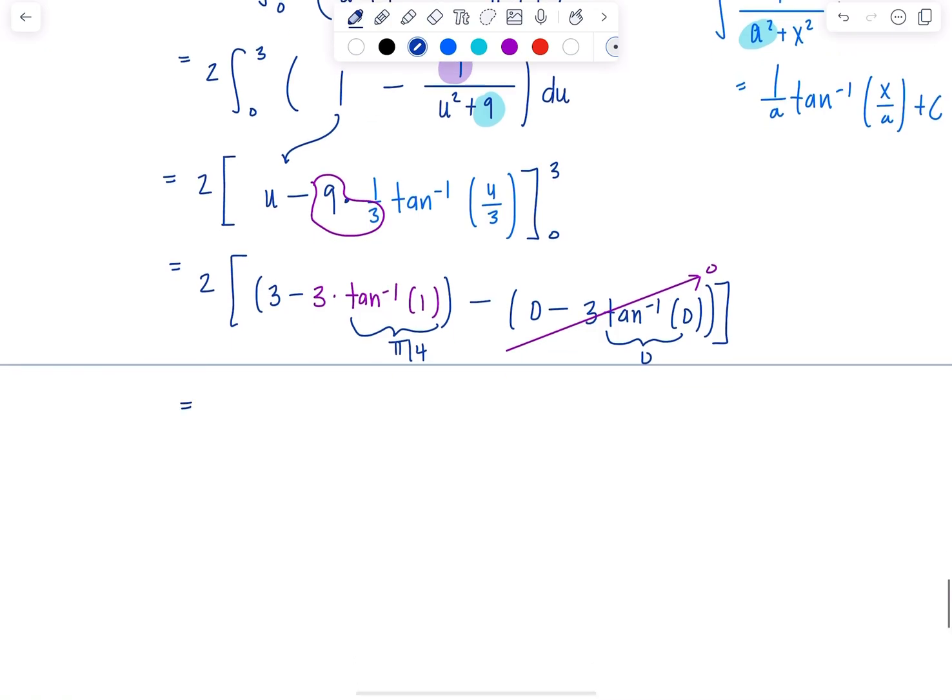And then now I have 2 times 3 minus 3 pi over 4. Distribute the 2. And this is 6 minus 6 pi over 4, which is 6 minus 3 pi over 2.